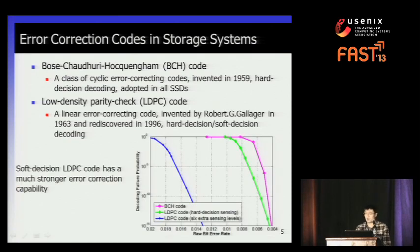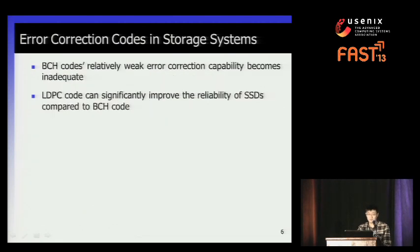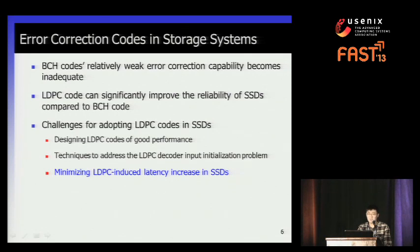Here is a simulation result that shows the superiority of LDPC code. It can tolerate ten times the raw bit error rate compared to BCH code. The green curve is the hard decision LDPC code and the blue curve is the soft decision LDPC code — I will explain these two concepts in later slides. Since BCH code becomes inadequate, LDPC code is being seriously considered in industry as the error correction code for future SSDs. In this paper, our study is focused on how to minimize the LDPC-induced read latency in SSDs.